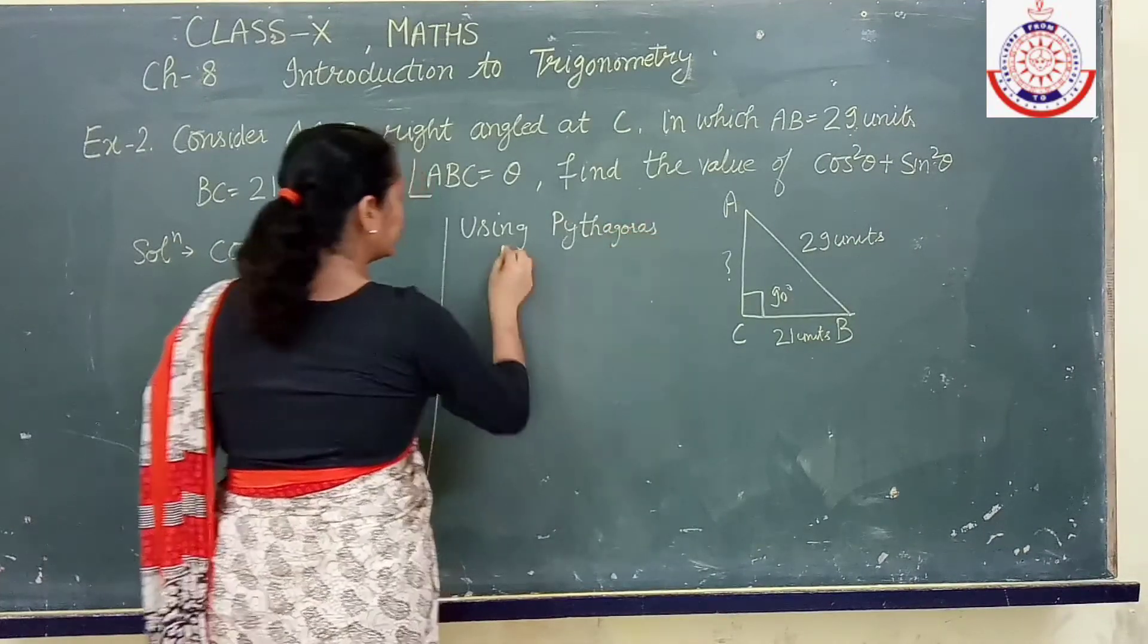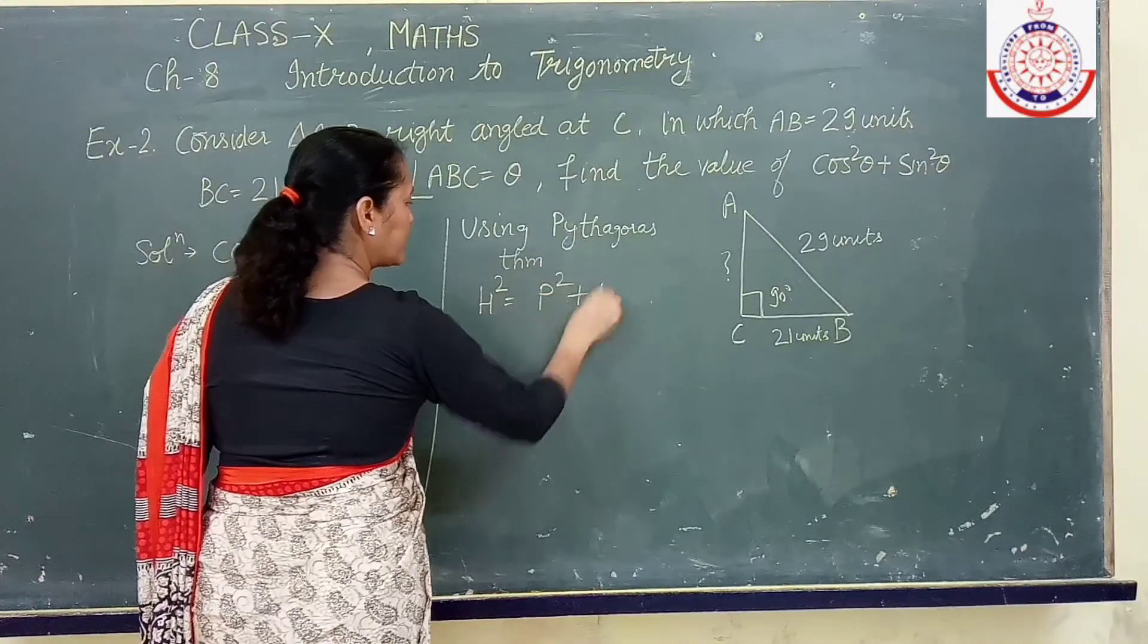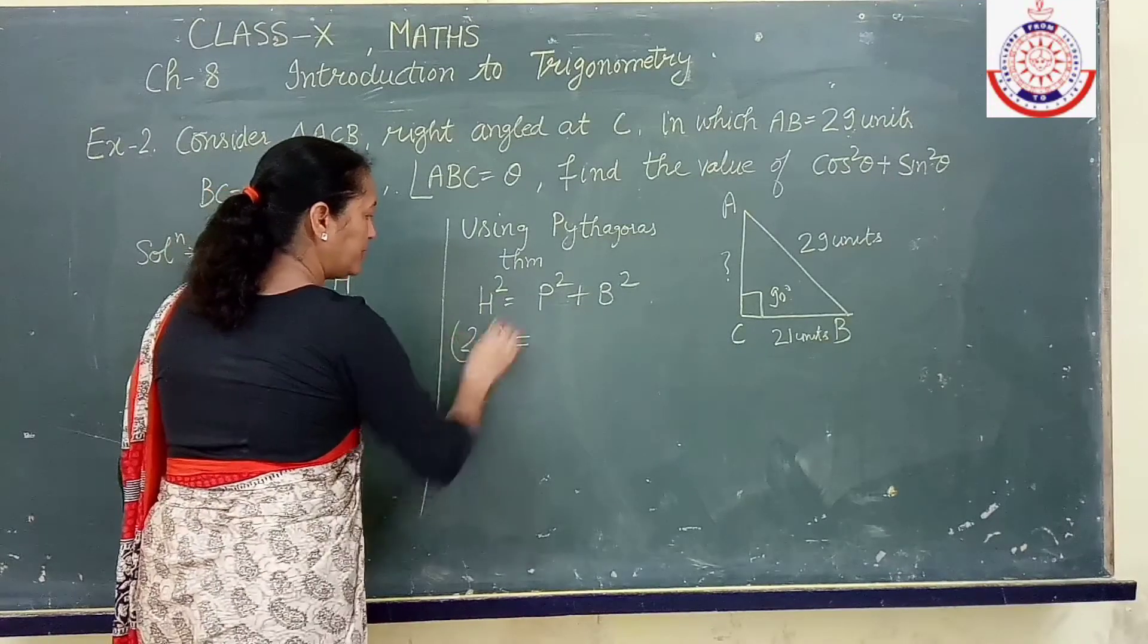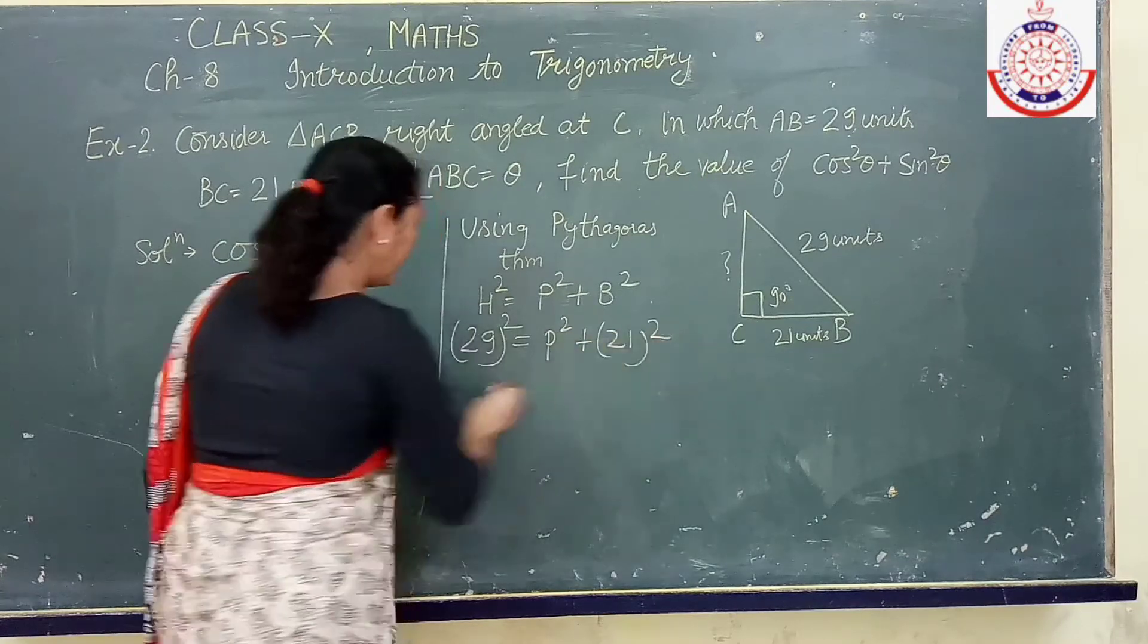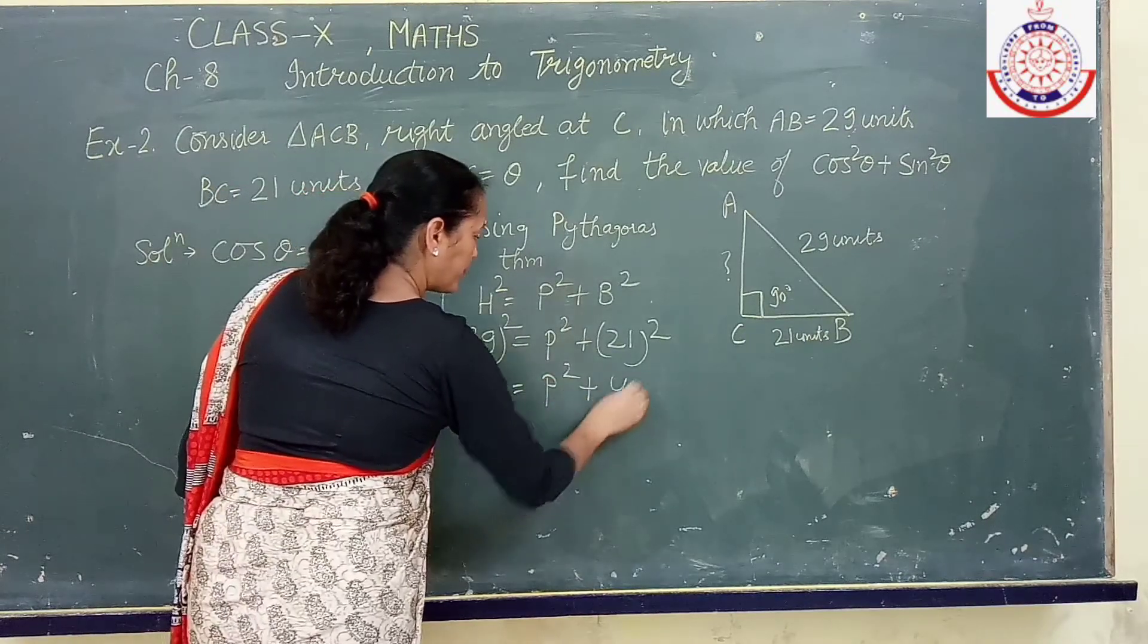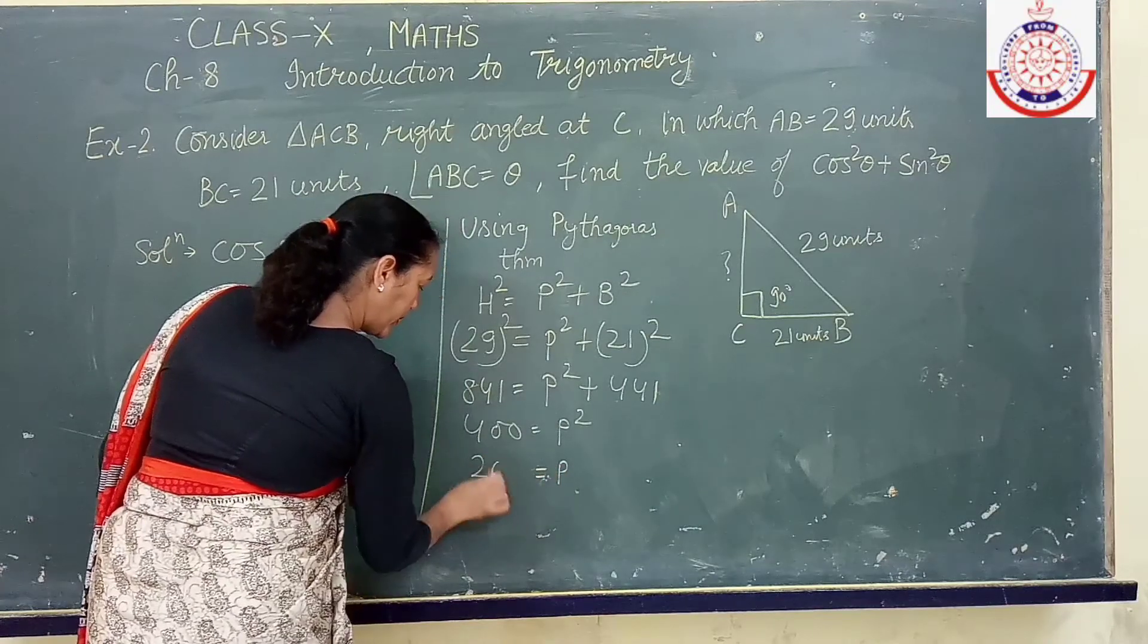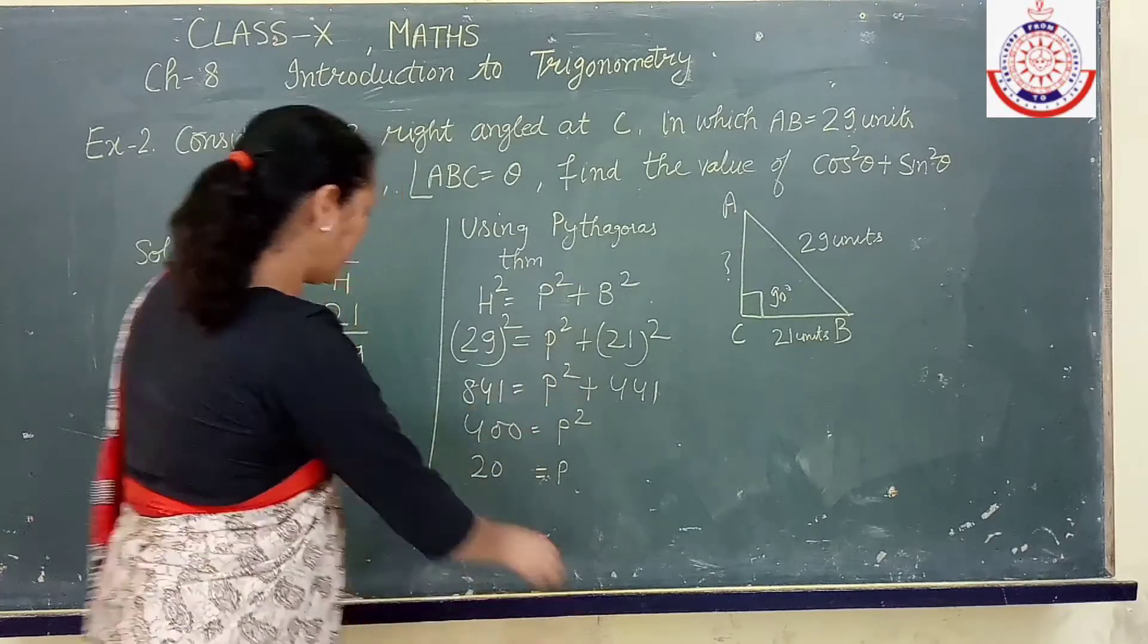Hypotenuse square equals to perpendicular square plus base square. Now hypotenuse is given to be 29, so we will write 29 square. Perpendicular is not known and base is 21. Square of 29 is 841. Square of 21 is 441, subtraction will give us 400. So perpendicular turns out to be 20, again we have taken only positive value because side cannot be negative.